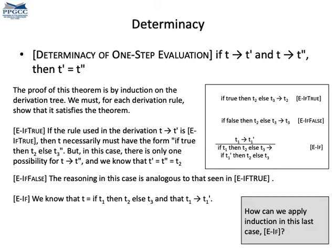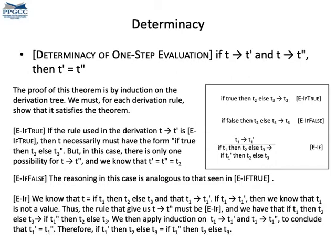Now, what about E-If? How can you demonstrate the theorem for this rule? This rule has a premise, namely, that t1 evolves to t1 prime. But if we have t1 arrow t1 prime, then t1 cannot be a value. I mean, neither true nor false, for these values do not evaluate to anything. But this premise is one level closer to the root of the derivation tree than the final term involving the if-then-else. So we can apply induction.